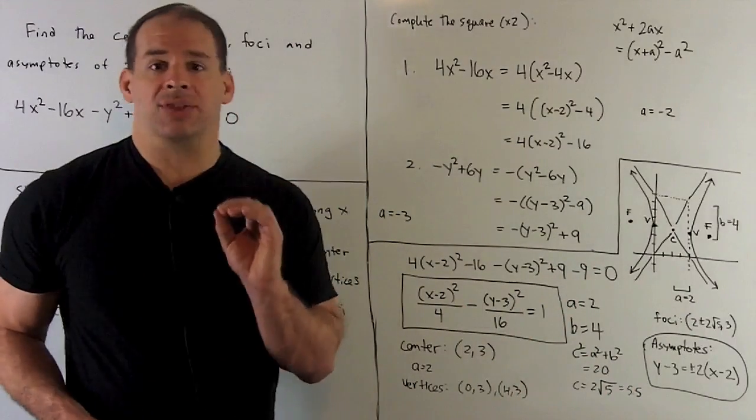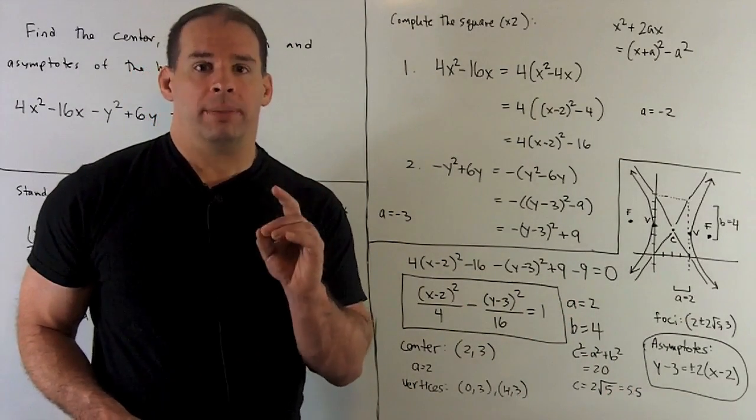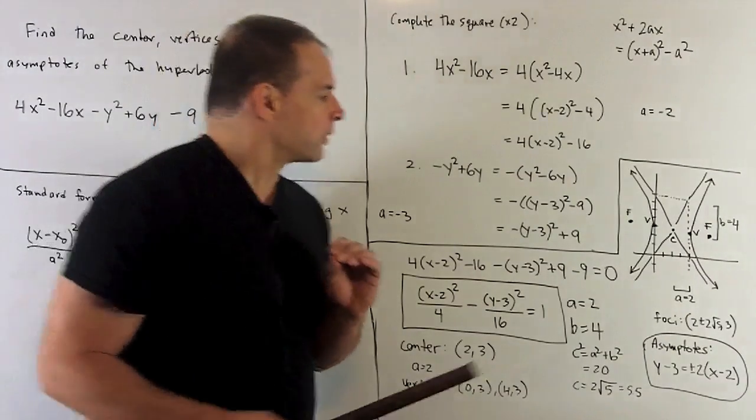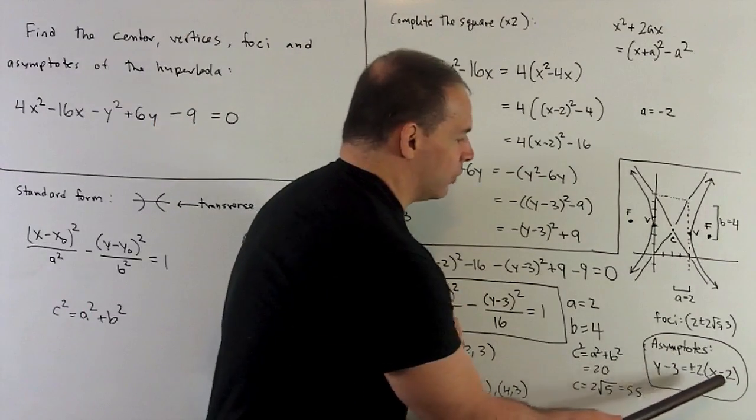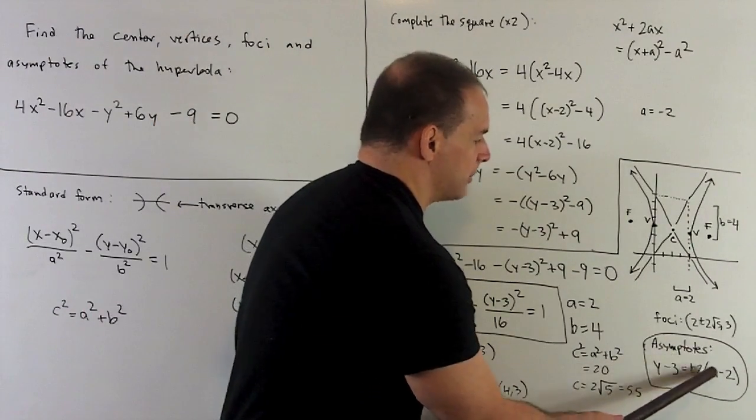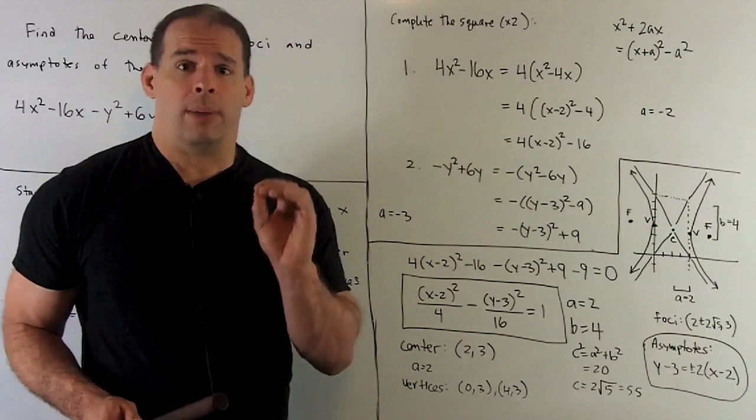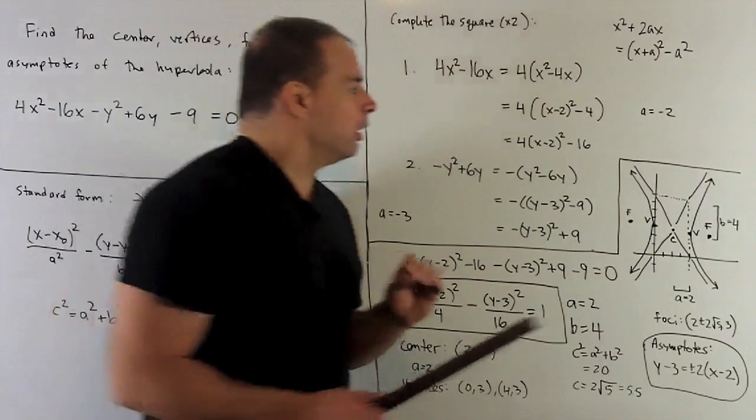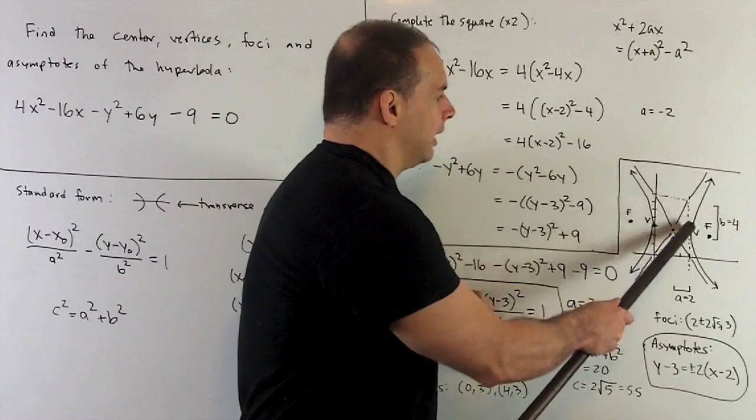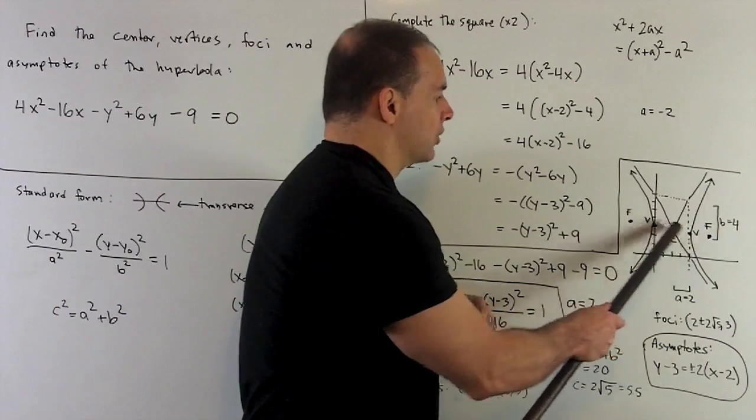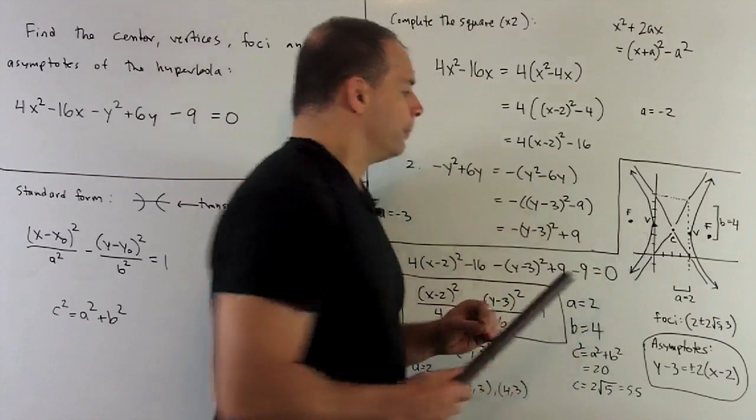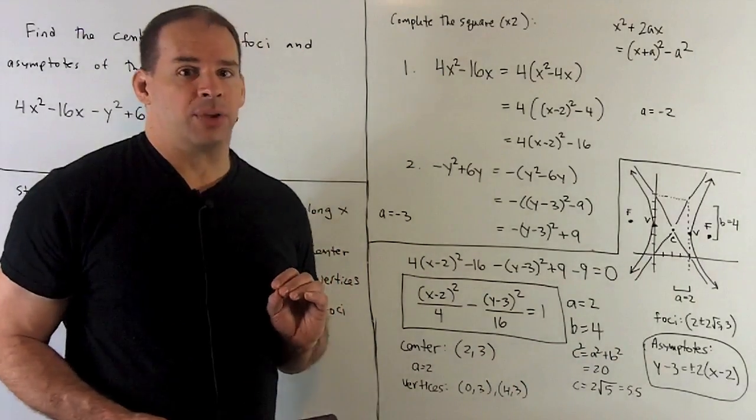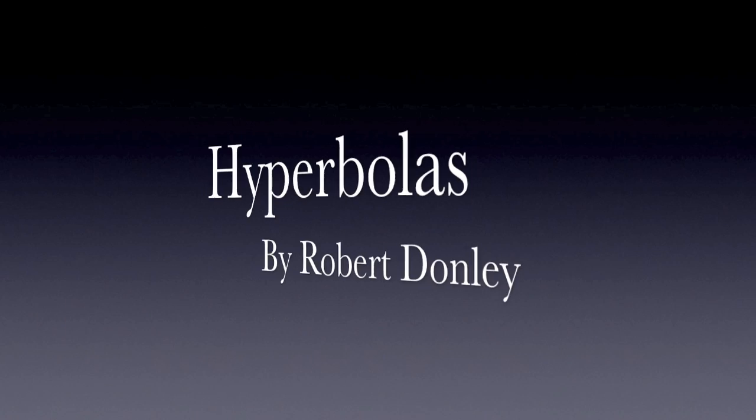We've got two lines. We know a point. That's going to be the center, which is at (2, 3). So, I have y - 3 = our slopes times (x - 2). How do you get the slope? Well, that's going to be B over A. If you take a look at the rectangle, the rise is going to be our B, which is 4. The run is going to be our A, which is 2. So, our slopes are going to be ±2. And that gives us our asymptotes.